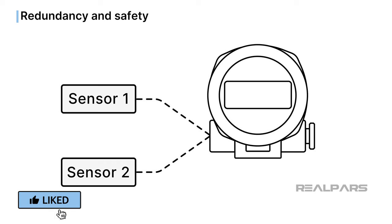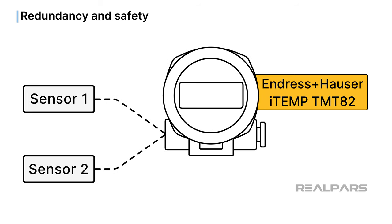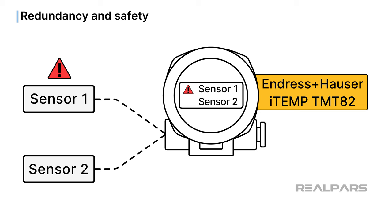Before we move on to NAMUR NE107, let's discuss the dual-sensor redundancy and fail-safe features of some smart transmitters, such as the Endress+Hauser iTEMP TMT82. Dual-sensor redundancy involves using two separate temperature sensors. If one sensor fails or malfunctions, the transmitter can switch to the other sensor, ensuring a fail-safe environment and maintaining continuous and accurate temperature monitoring. If the transmitter is capable, both sensor outputs are compared in real-time to detect abnormalities or faults such as sensor drift, thus signaling the need for maintenance or replacement.